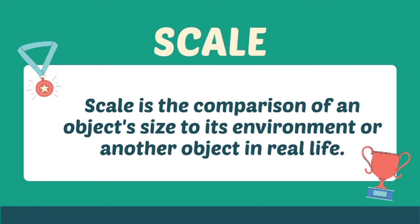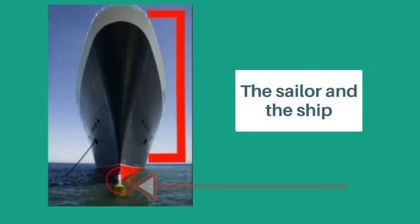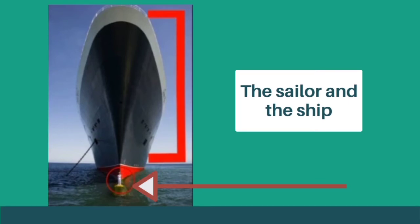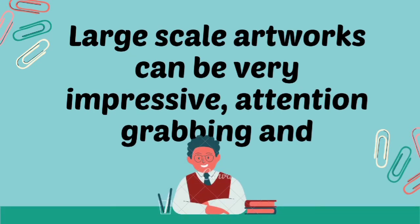Look at this example — the size of the fish gives a scale of how big it is compared to the fishermen. In this photo, the sailor's size portrays how massive the ship is.